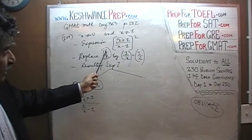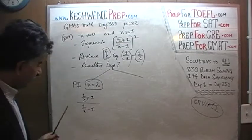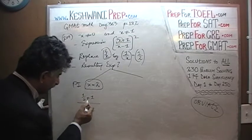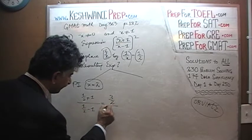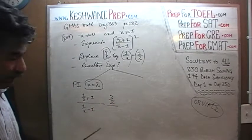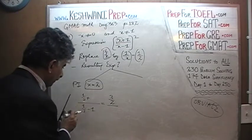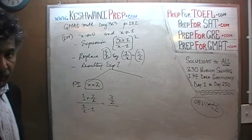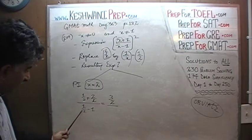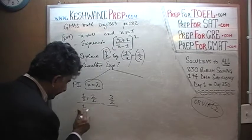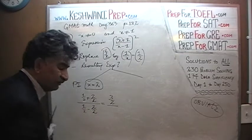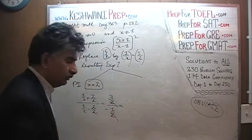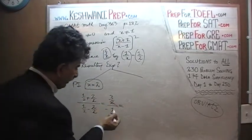We are now simply going to substitute the value of 2 for x. We end up with 1 over 2 plus 1. 1 over 2 plus 1 is 3 halves, because 1 half plus 2 halves is 3 halves. And then 1 half minus 1, which is 2 halves, so 1 half minus 2 halves is negative 1 half. The 2 cancels out and we end up with negative 3.